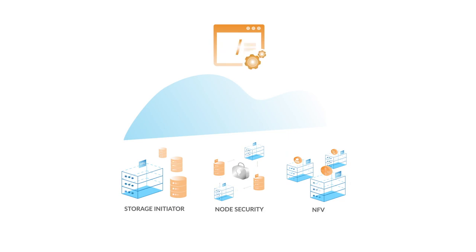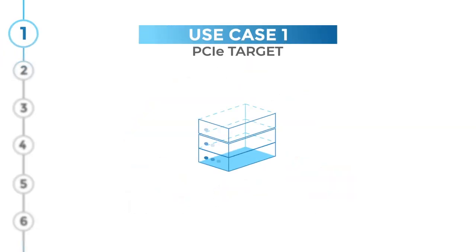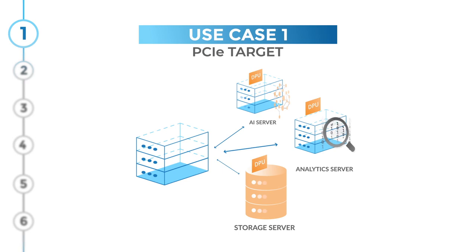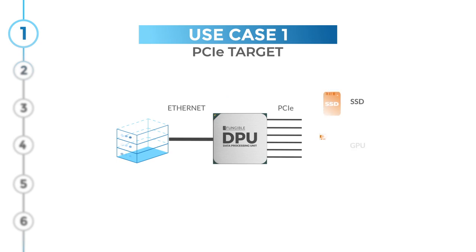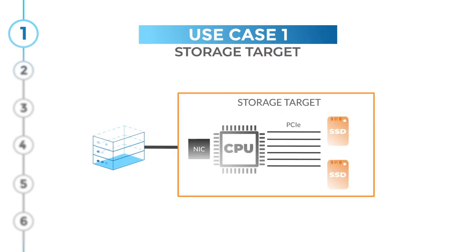The programmability of the data path engine allows the Fungible DPU to take on different distinct personalities, and even multiple personalities at once. In the first persona, the Fungible DPU sits in a PCIe target such as a storage, AI, and analytics server, acting as a root complex to PCIe devices such as SSDs, GPUs, and FPGAs.